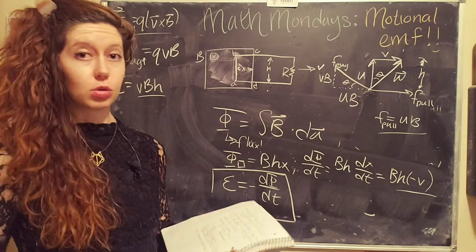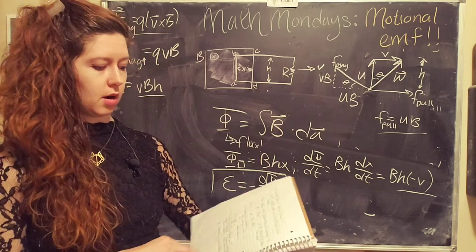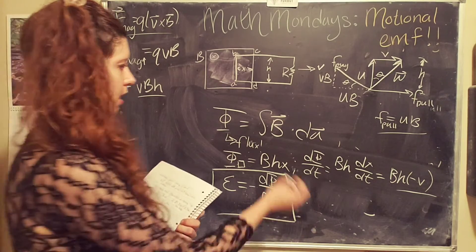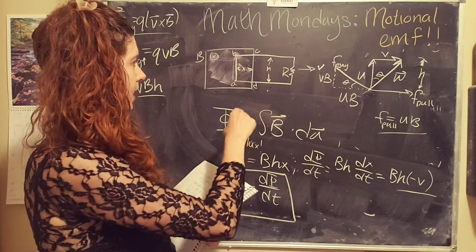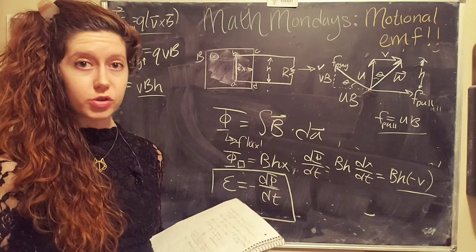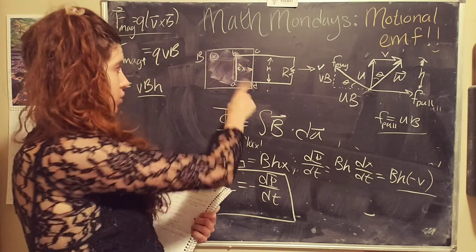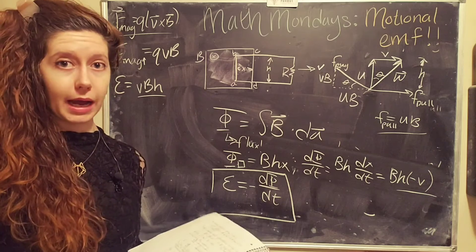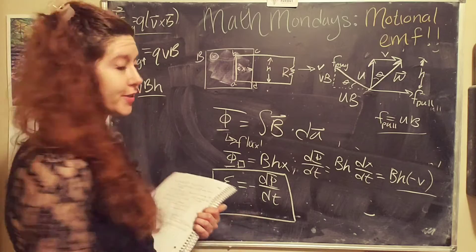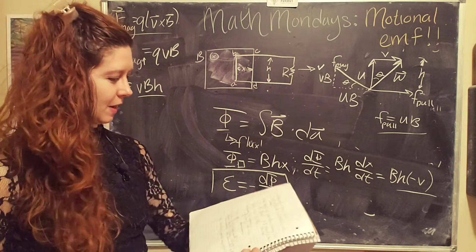The flux rule applies to loops of all shapes and sizes moving in all different directions. It also works through non-uniform fields, which is really cool — here we only have a single thing changing, which is the size of the area through which the magnetic field is permeating. But if we had a changing magnetic field, or if H was changing as well, this would still hold. I'm not going to do the proof, but you can look it up if you want.